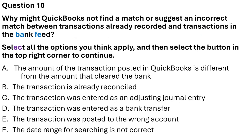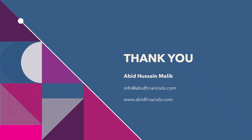Question 10: Why might QuickBooks not find a match or suggest an incorrect match between transactions already recorded and transactions in the bank feed? Select all options that apply. The correct answers are: A) the amount of the transaction posted to QuickBooks is different from the amount that cleared the bank; B) the transaction is already reconciled; E) the transaction was posted to the wrong account; and F) the date range for searching is not correct.